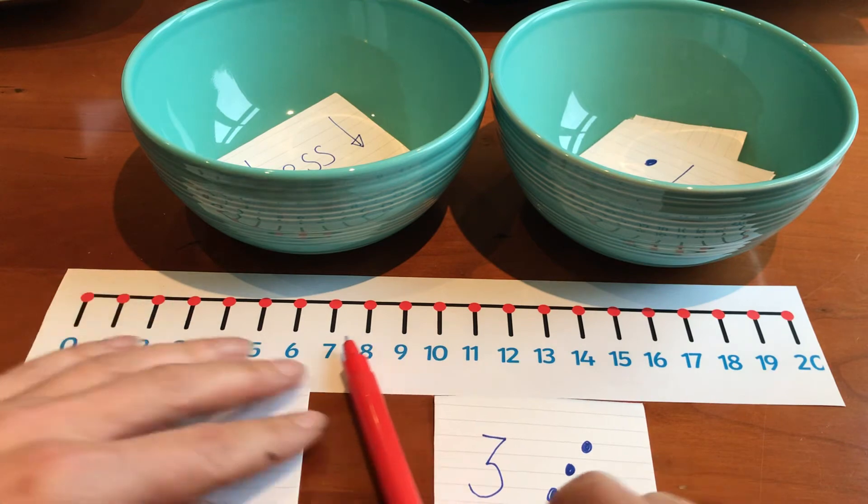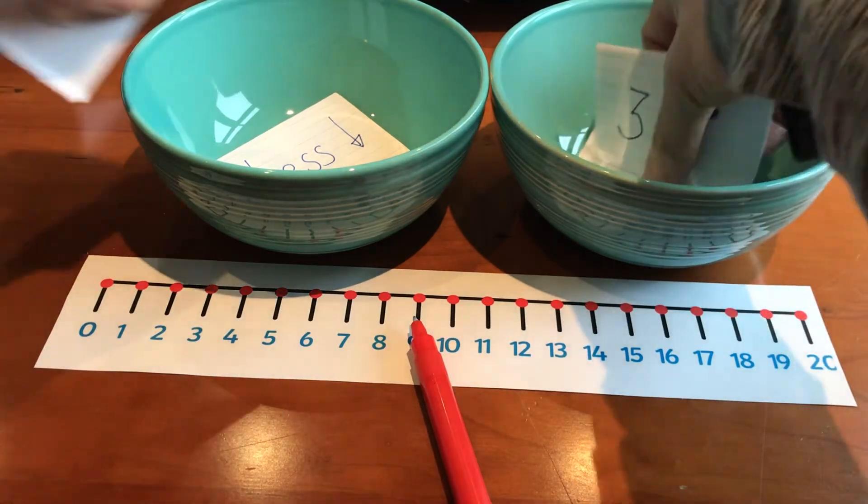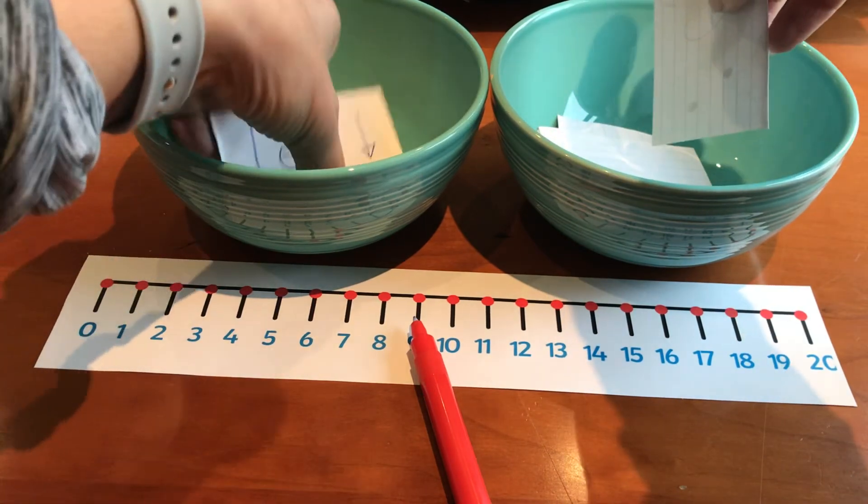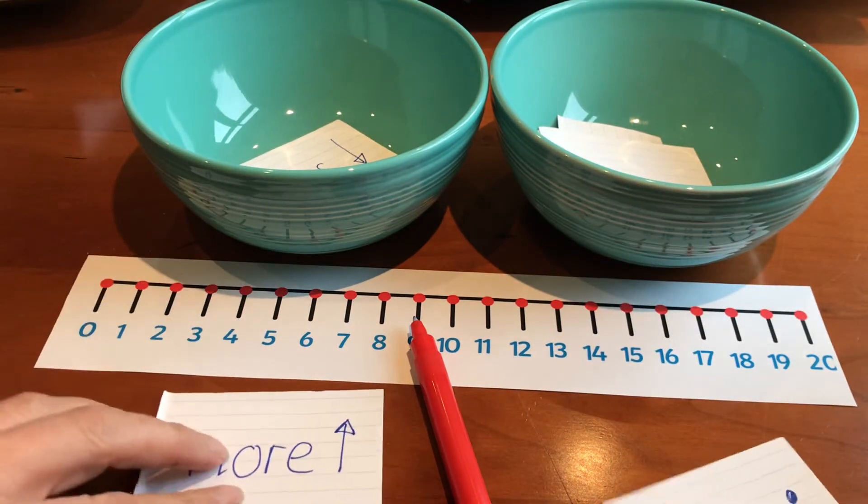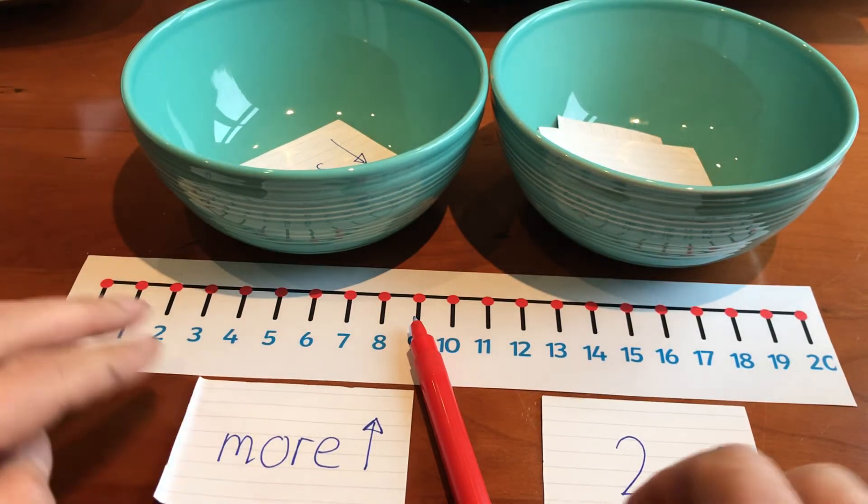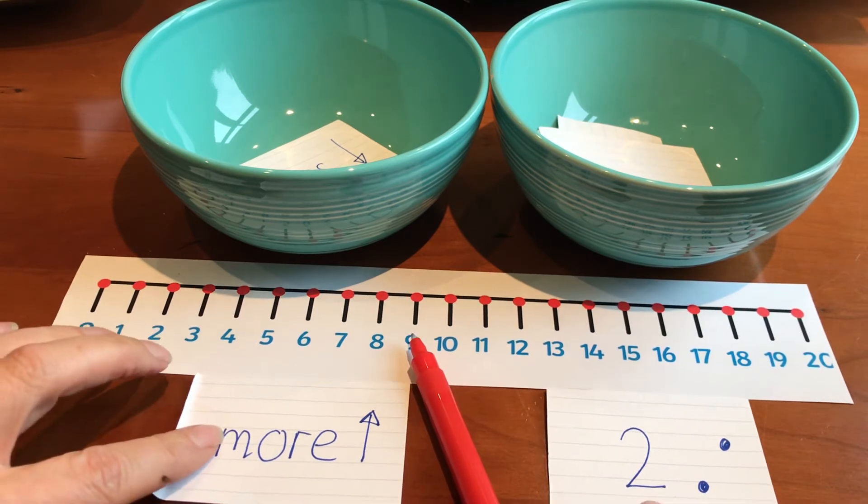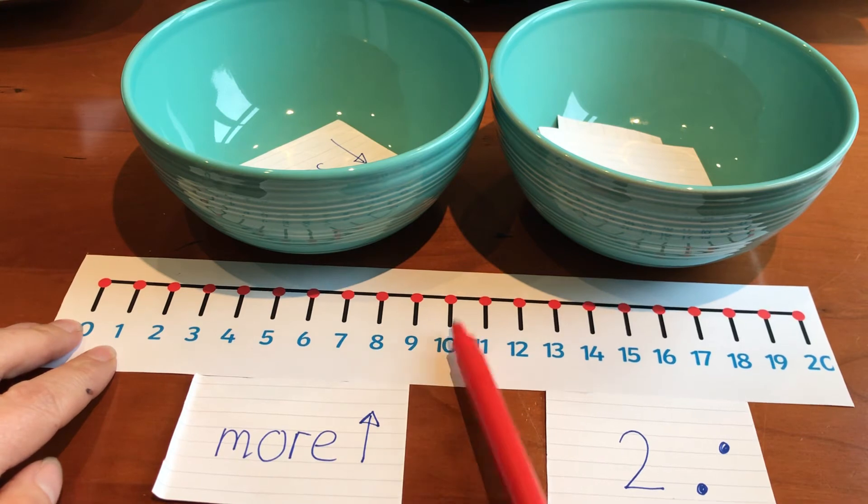I'm nearly back to where I started. Okay, let's do it again. This time I've got 2 more. So I'm on 9, I need to count on 2 from 9. So I've got 9, I'm going to move up: Number 10, 11.